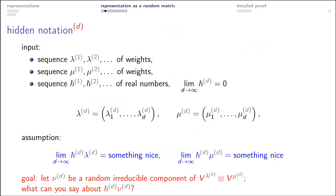I need to tell you a bit about notation. In order to address asymptotic problems precisely, we cannot just speak about a single λ — we need to speak about a sequence of λ's and similarly for μ. So formally, our starting point is not a single λ but a sequence of λ's, a sequence of μ's, where the d-th element of my sequence has d components. We also have a sequence of real numbers I call the Planck constant, denoted ℏ — and this name is not a coincidence; it will turn out to have physical meaning.